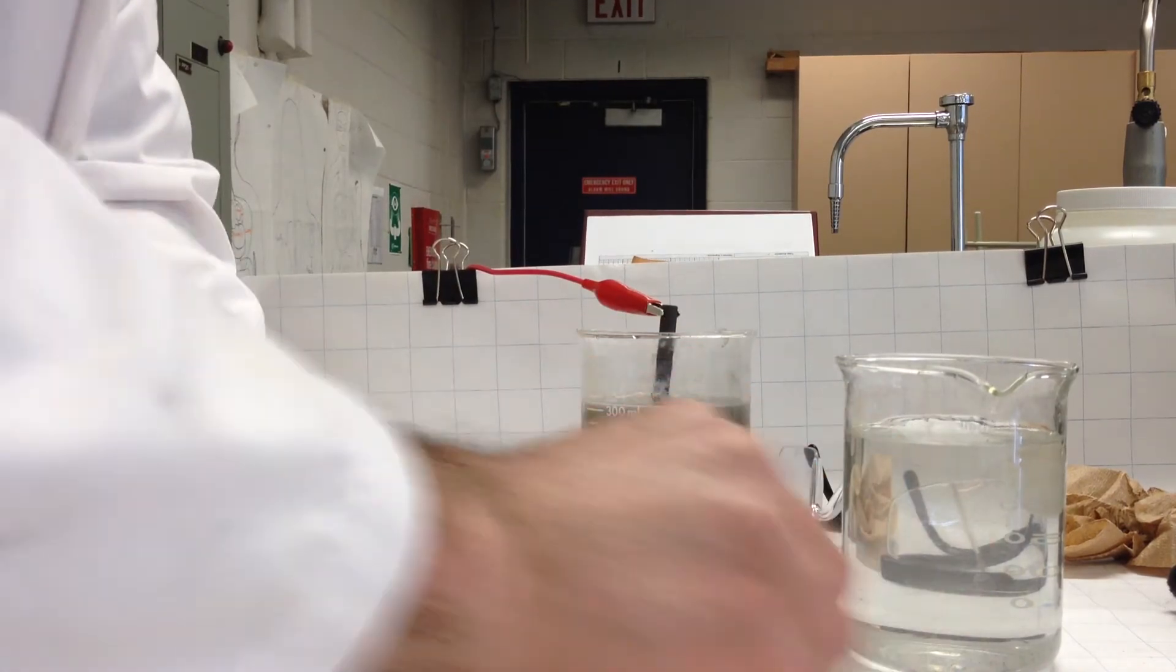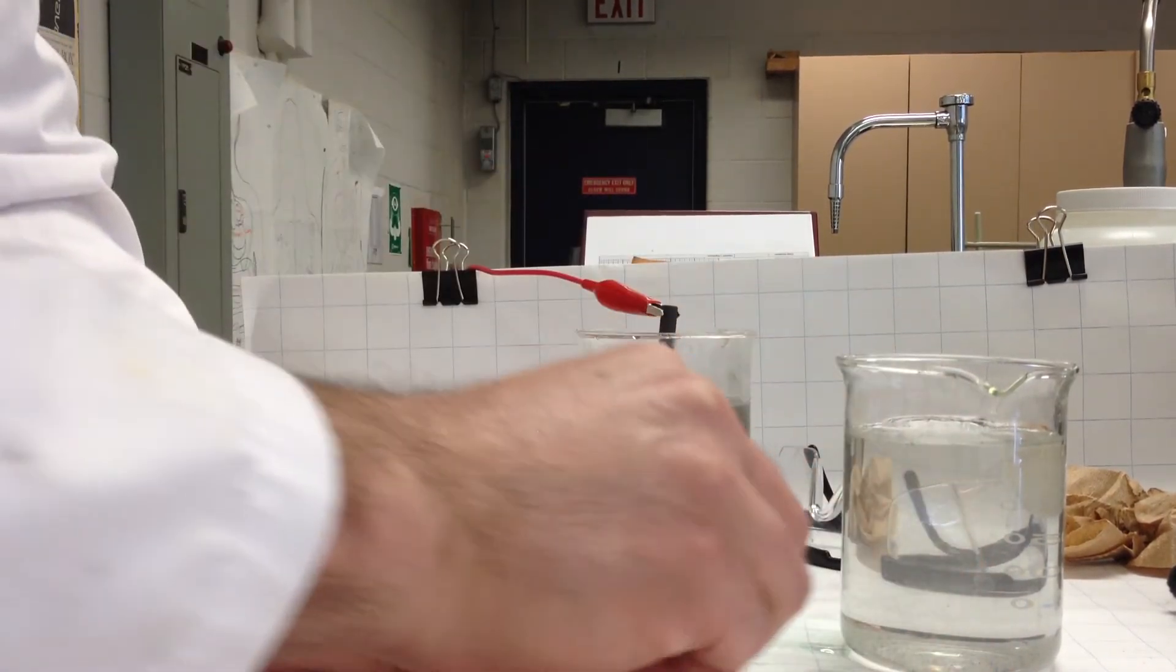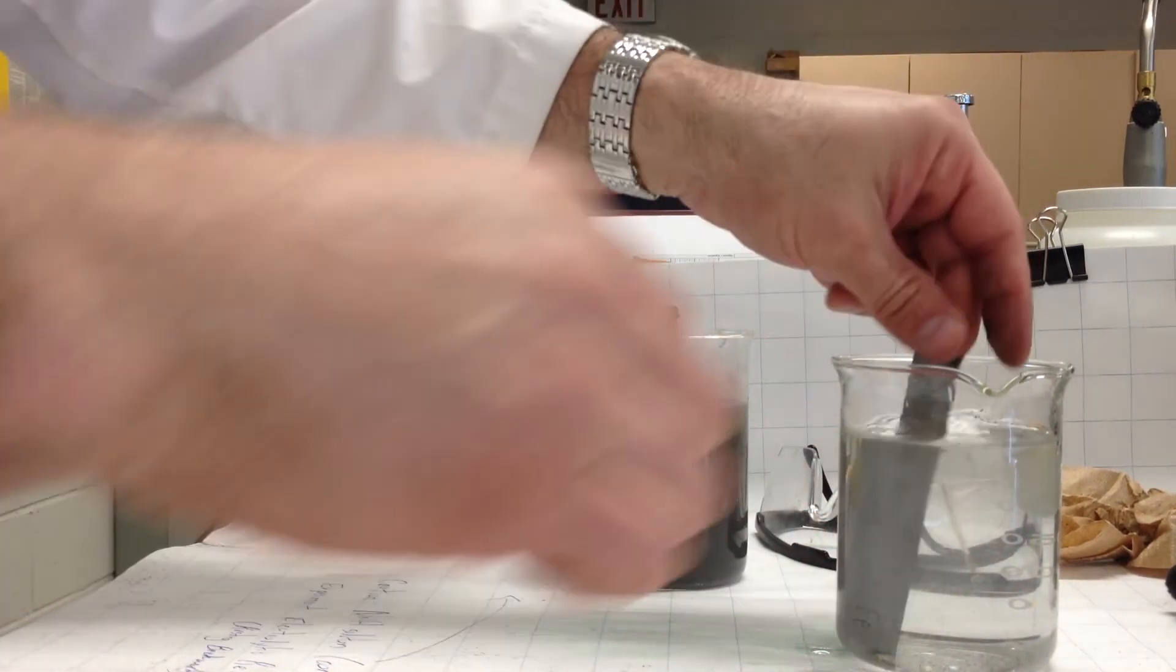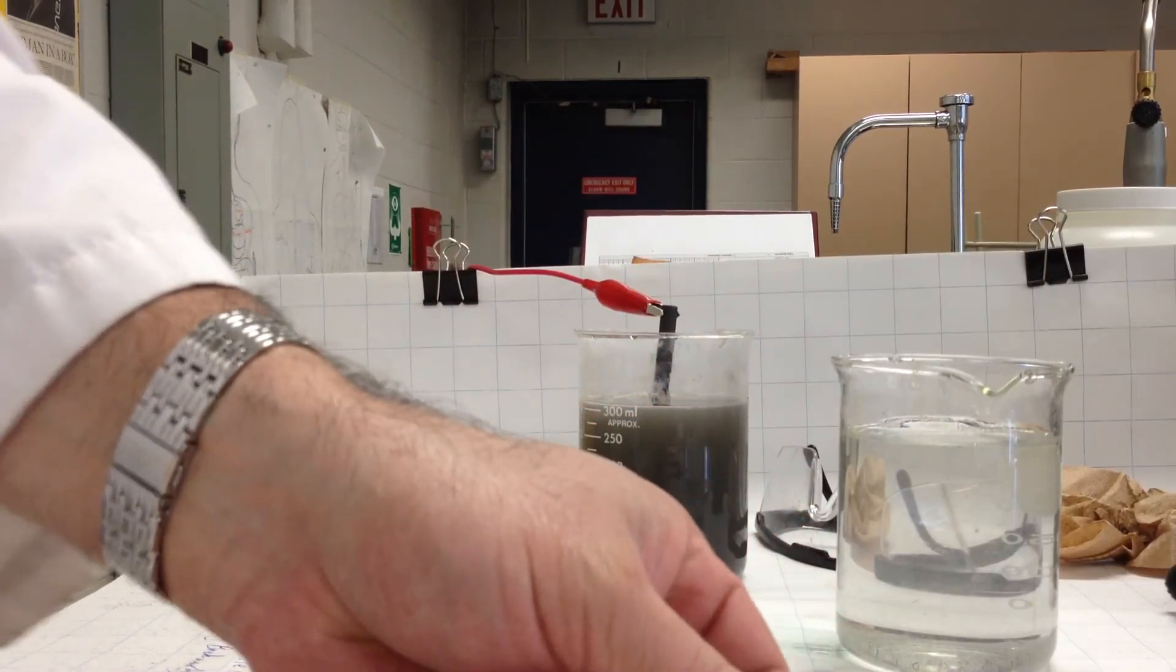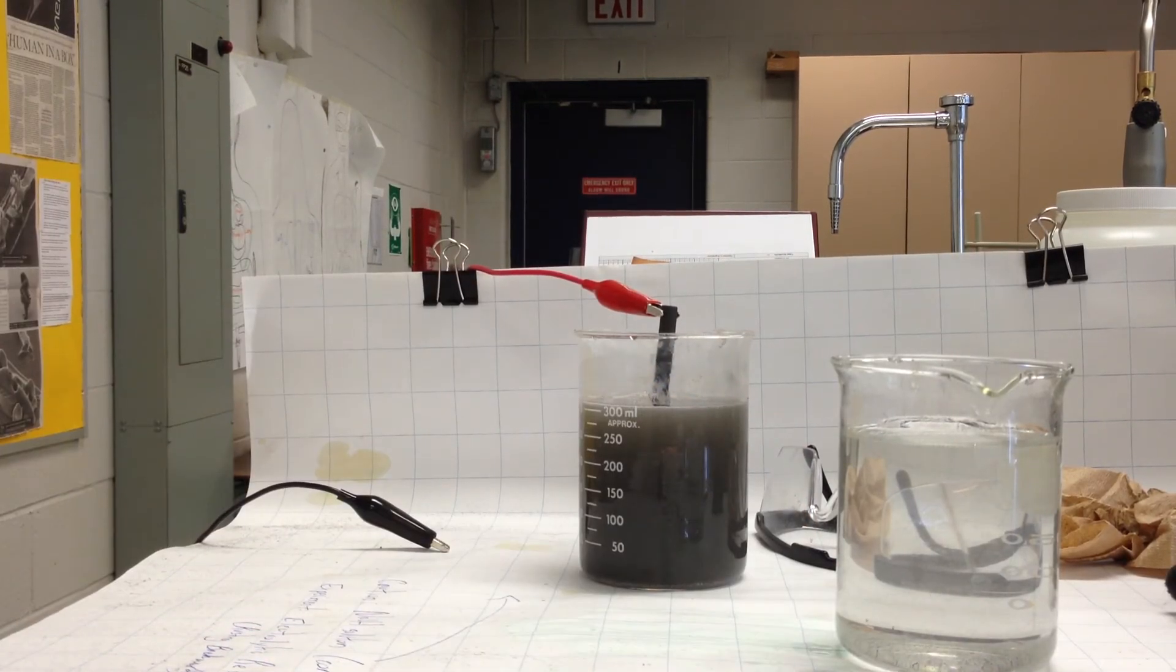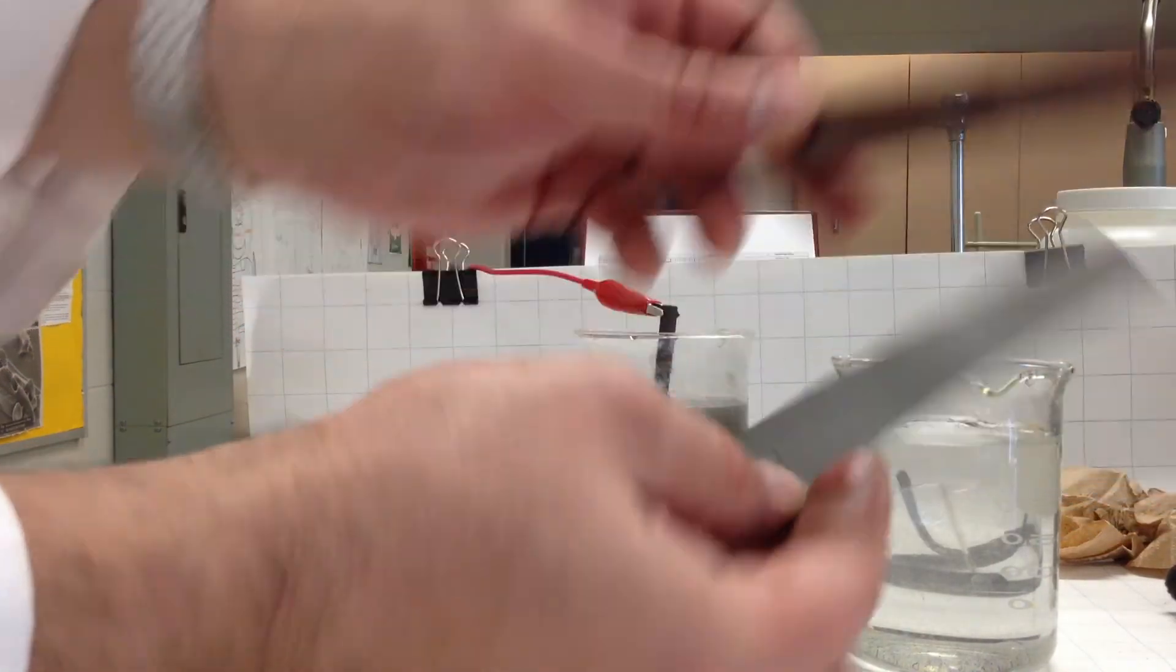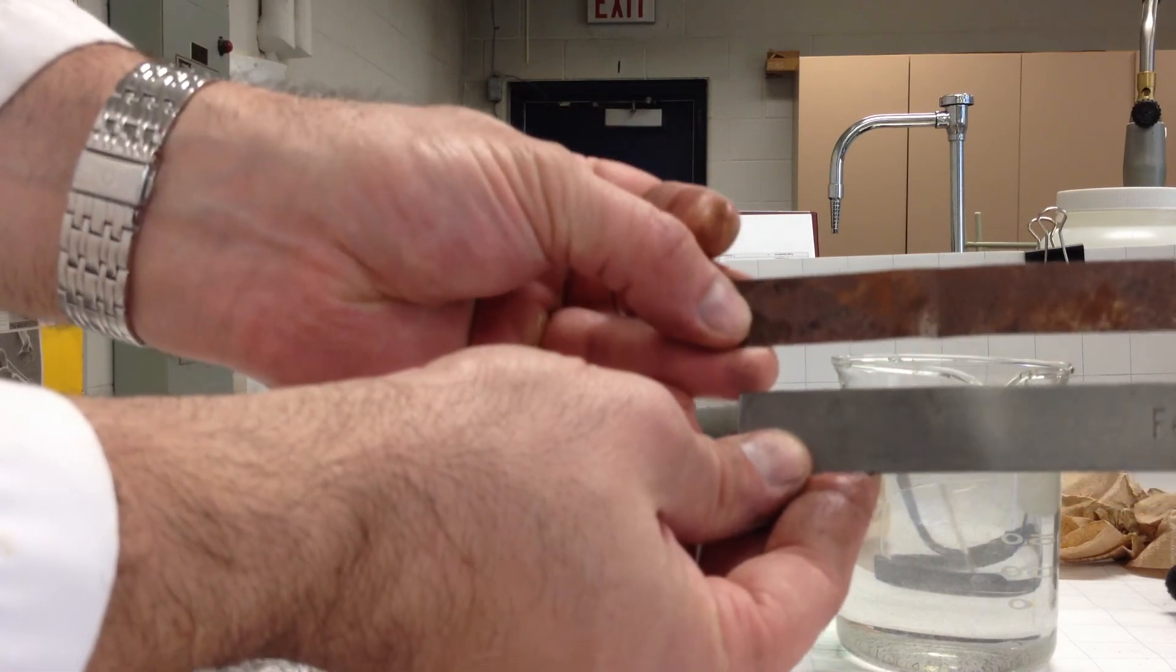You get the clean surface showing through again. There it is. By comparison, you can look at the piece that has not undergone the treatment. You see that the iron is restored to its normal state.